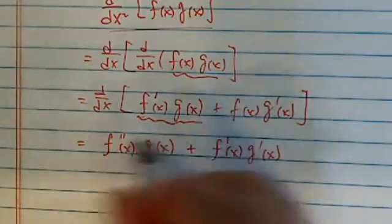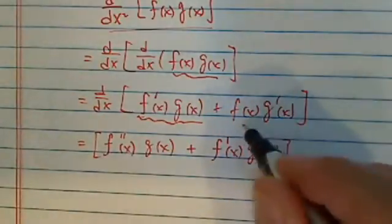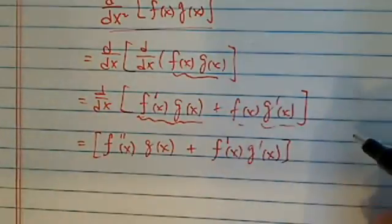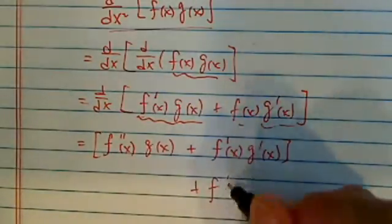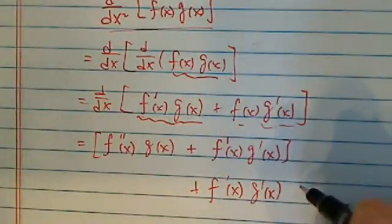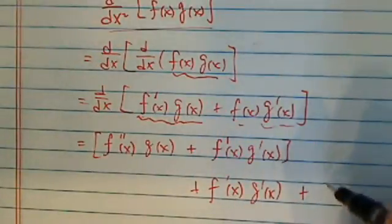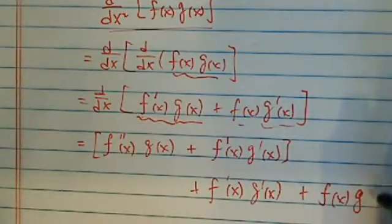Okay, that's just for the first function. Now let's take a derivative of the second function. So take the derivative of the first one, leave the second one alone, plus leave the first one alone, and then take the derivative of the second one.